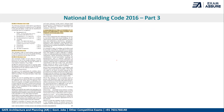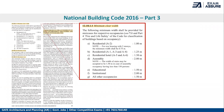Another important part is the minimum clear widths required for staircases, which are mentioned in a table. For residential buildings, the minimum staircase width ranges from 0.7 to 1.25 meters depending on type. For educational institutes, the minimum width required is 1.5 meters, and for institutional buildings, it is 2 meters.